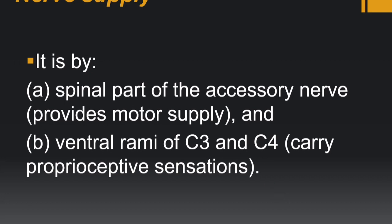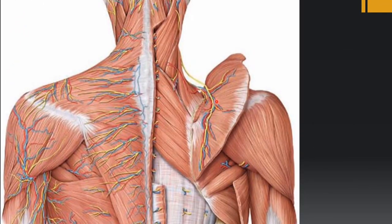The nerve supply of trapezius is by the spinal part of the accessory nerve — the 11th cranial nerve — and the ventral rami of C3 and C4, which carry proprioceptive sensations. You may wonder why it is not supplied by the dorsal rami. The reason is that latissimus dorsi and trapezius were originally ventral muscles that migrated to the back during intrauterine life — that is why they are supplied by the ventral rami. Similarly, latissimus dorsi is supplied by the ventral rami via the thoracodorsal nerve. Here you can see the spinal accessory nerve supplying the anterior aspect of the trapezius muscle.